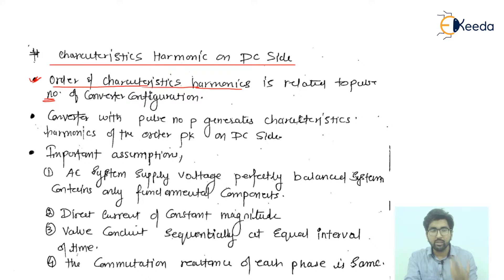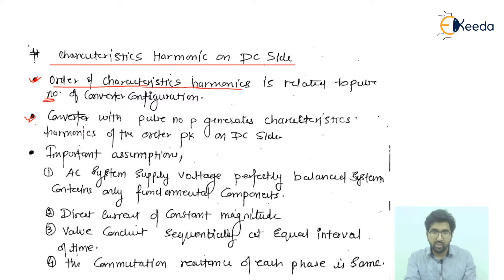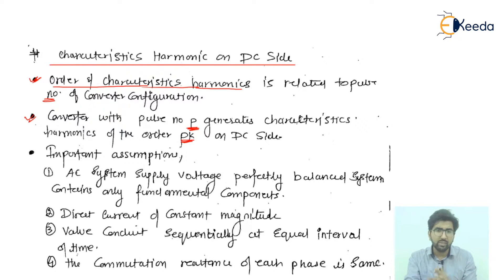If we are using a six pulse converter, we use the number 6. If we are using a 12 pulse converter, we use 12. For an 18 pulse converter, we use 18. The formula is n = P ± 1, where P is the pulse number. A converter with pulse number P generates characteristic harmonics of order PK on the DC side, where P is the pulse number and K is an integer.